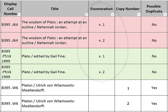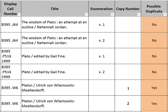However, if your library owns multiple copies, you are only required to retain one of those copies. To identify possible duplicates of titles allocated for retention, filter for yeses in the possible duplicates column of the exported list.